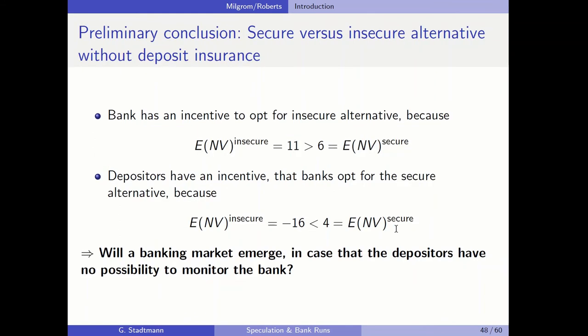The expected net value for the bank is 15 minus equity of 4, which equals 11. The bank has an incentive to opt for the insecure alternative because its expected net value is 11, compared to only 6 for the secure alternative. The depositors, on the other hand, prefer the secure alternative because its expected net value of 4 is much larger than the negative 16 of the insecure alternative. So there is a clear conflict of interest between the agent (the bank) and the principals (the depositors).